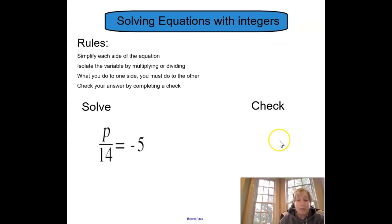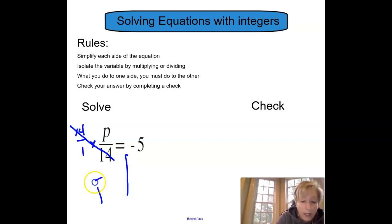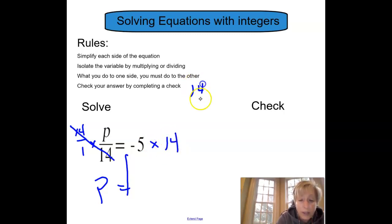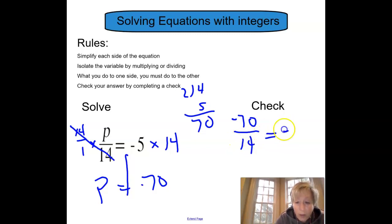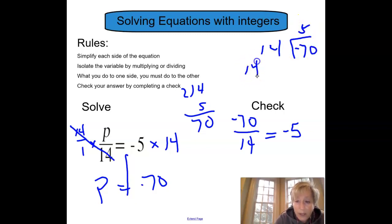All right, one more chance to look at this kind of problem, and then you're going to try it on your own. If I've got p divided by 14, I'm going to multiply this by 14 over 1. They'll cancel out — that'll isolate my p. If I multiply by 14 on the left, I have to multiply by 14 on the right. 14 times 5 is going to give me 70. So I believe p equals negative 70. I must do my check: negative 70 divided by 14 should equal negative 5. 14 into 70 goes 5 times — 14 times 5 is 70. My answer must be right.